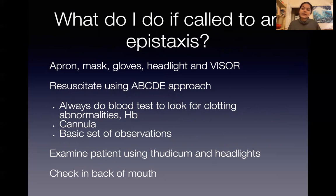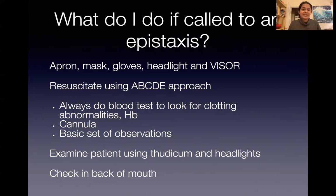What I would do then is an ATLS approach — resuscitate the patient using A, B, C, D, E. Under C, don't forget to do a blood test to look for any clotting abnormalities, especially if they've been bleeding a lot. Fit them with a cannula if they don't already have one. Take a basic set of observations and correct any abnormalities.